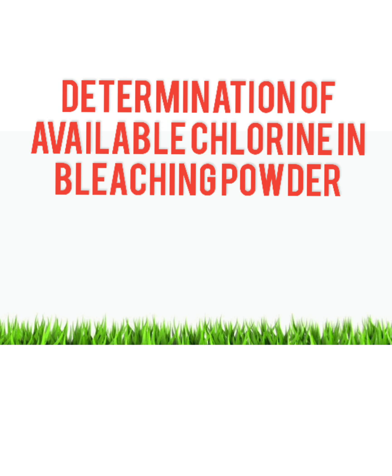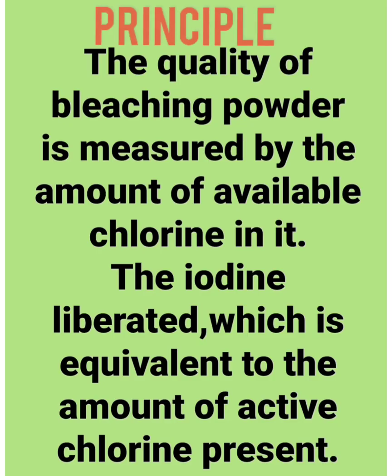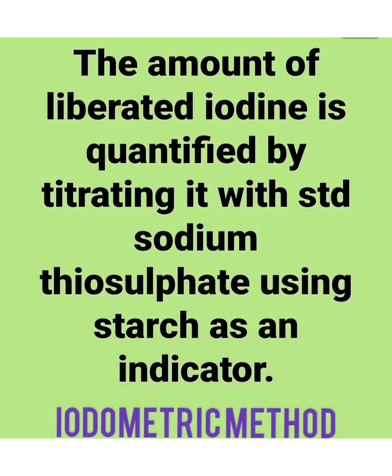Determination of available chlorine in bleaching powder. The quality of bleaching powder is measured by the amount of available chlorine in it. The iodine liberated is equivalent to the amount of active chlorine present. The amount of liberated iodine is quantified by titrating it with standard sodium thiosulfate using starch as an indicator. This method is called the iodometric method.